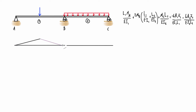For a simply supported beam with a point load right in the middle, we'd get a triangular shape with a height of PL over 4. For a simply supported beam with a distributed load, we'd get a parabolic shape with a height of wL² over 8. You can find these values in tables or just use a virtual cut and free body diagram.